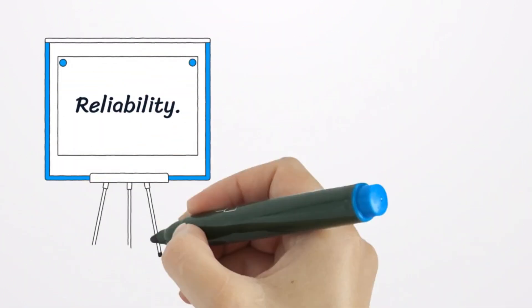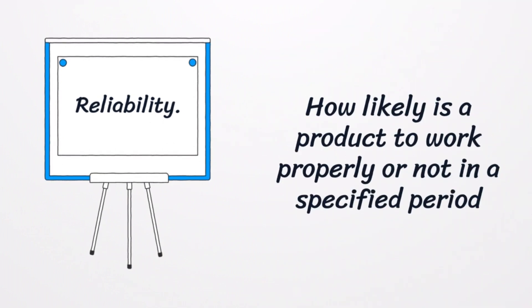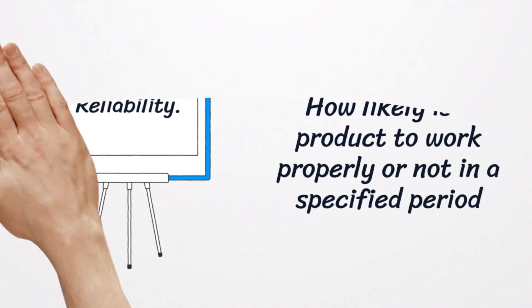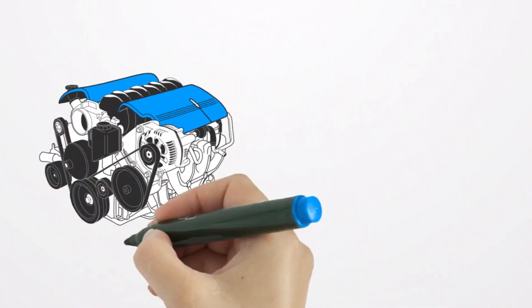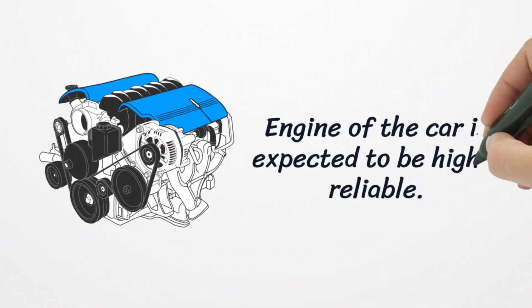Reliability is the third dimension. Reliability refers to how likely is a product to work properly or not in a specified period. This dimension is more or less important depending on the product's or service's purpose. For example, engine is the most important part of an automobile, so you need it to be highly reliable.